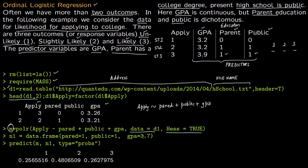To predict probabilities, we create new data n1 where parent education is 1, public is 1, and GPA is 3.7. We call predict(model M, newdata = n1, type = 'probs'). The output gives: probability of unlikely to apply = 0.25, slightly likely to apply = 0.48, and highly likely to apply = 0.26.